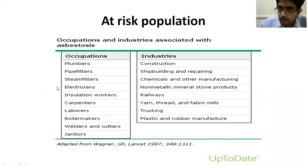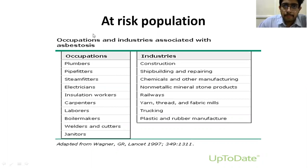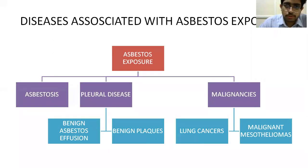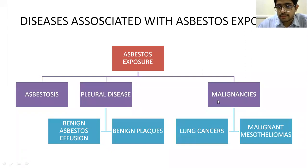The occupations at major risk for asbestosis include plumbers, pipe fitters, steam fitters, electricians, and the shipbuilding and repairing industries. When exposed to asbestos, you'll get asbestosis which is a parenchymal disorder, or a pleural disease like benign asbestos pleural effusion or benign plaque. Sometimes patients may get malignancies — these include lung cancers and malignant mesotheliomas.